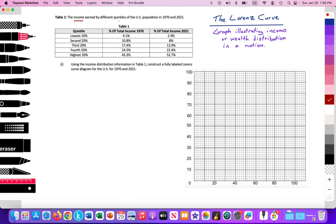Quintiles are groups of 5, so we're dividing the population into groups of 5, 20, 40, 60, 80, and 100 for the U.S. population in 1970 versus 2021. So we'll see over time whether income distribution is improving or not. In the left column, we see the poorest 20%, the next poorest 20%, the middle 20%, the highest 20%, and the highest income group 20% in the United States.